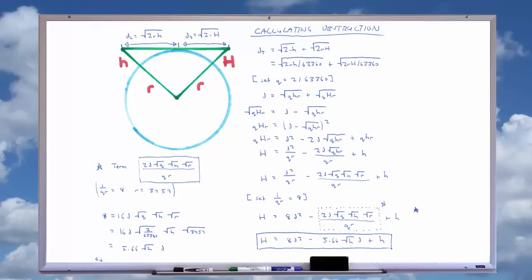Now all we need to do is to rearrange the equation to isolate large H, and then plug in the constants to give a working equation. So we have our starting equation, d = sqrt(2r small h) + sqrt(2rH).